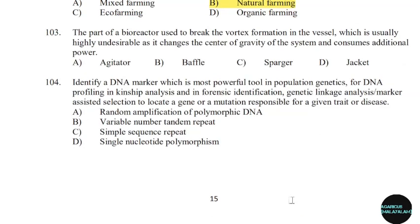103rd question: The part of a bioreactor used to break vortex formation in the vessel, which is usually highly undesirable as it changes the center of gravity of the system and consumes additional power. Correct answer: Option B — Baffle.